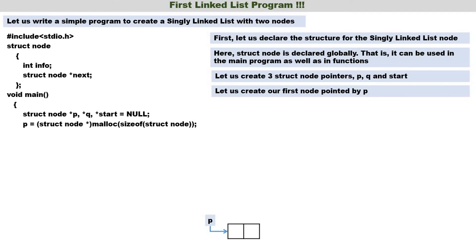To create the first node pointed by p: p = (struct node*) malloc(sizeof(struct node)). We get a node pointed by p. Now we store a value: p->info = 10. The first member info is accessed using the arrow operator. We also set p->next = NULL, so we have one node pointed by p with info=10 and next=NULL.